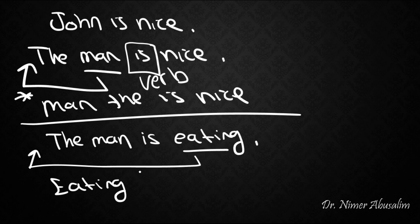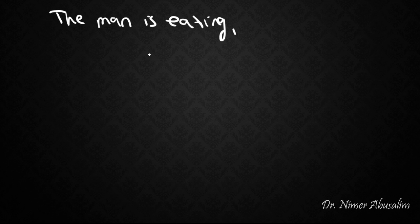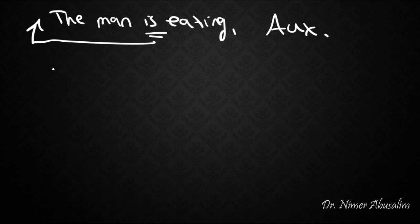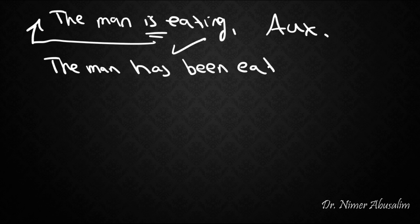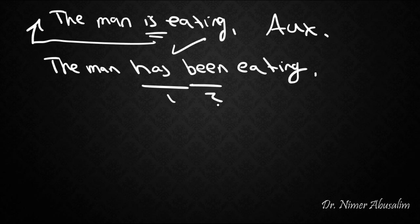If we moved the verb, we would end up with 'eating the man is' — and that's wrong as well. So what if instead of moving the verb, we move the auxiliary verb? 'Is the man eating?' — that's a correct outcome. But what about 'the man has been eating'? Now which auxiliary do we move, the first or the second one?